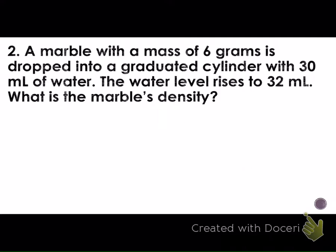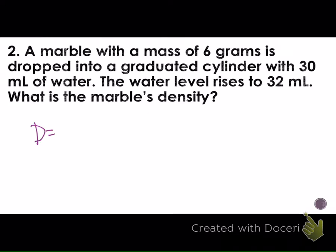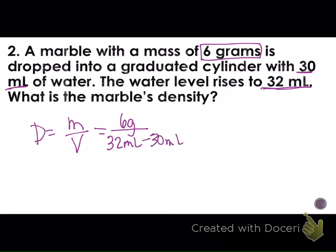For example number two, we have a marble with a mass of 6 grams is dropped into a graduated cylinder with 30 milliliters of water. The water level rises to 32. What is the marble's density? So this is using that displacement that we talked about earlier. And we have density equals mass divided by volume. The mass that we're given in this example is 6 grams. For our volume, we need the new volume minus the old volume. So we have 32 milliliters minus 30 milliliters. That gives us 6 grams over 2 milliliters. And our answer is 3 grams per milliliter.